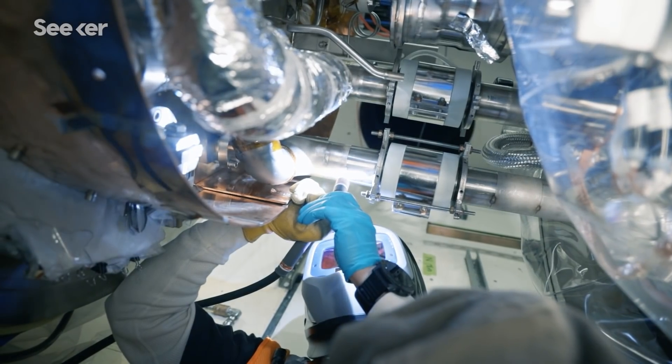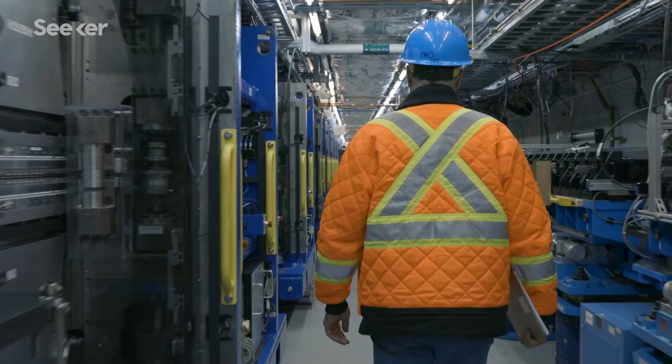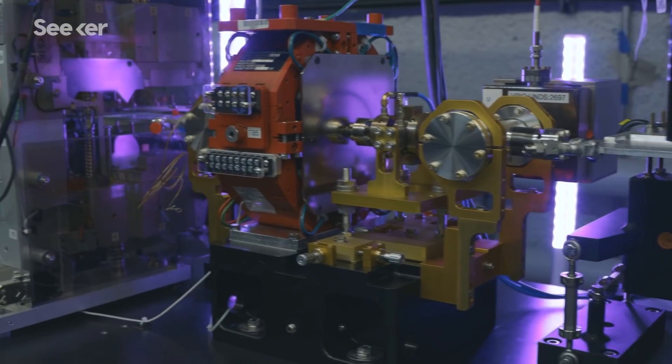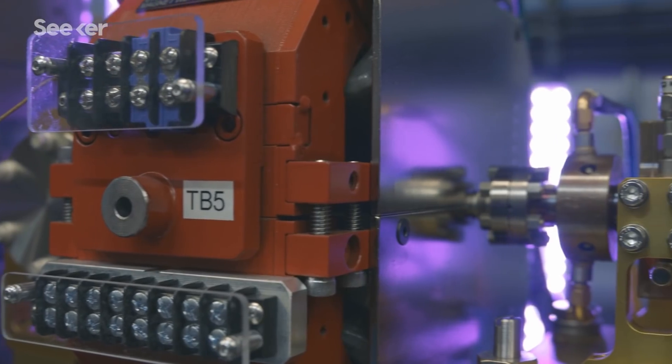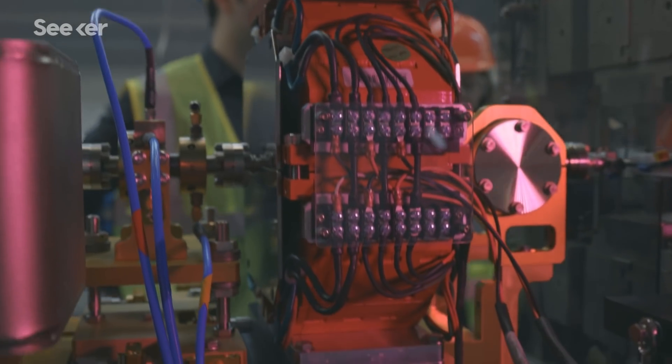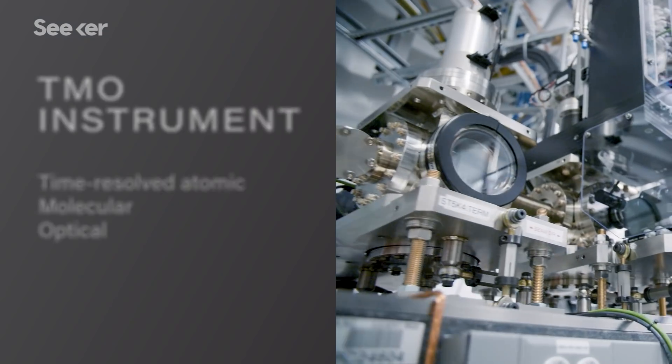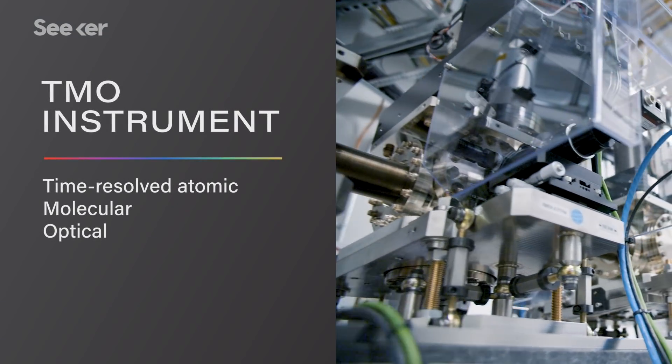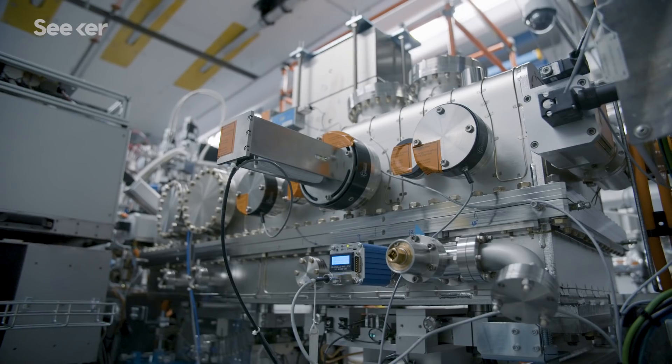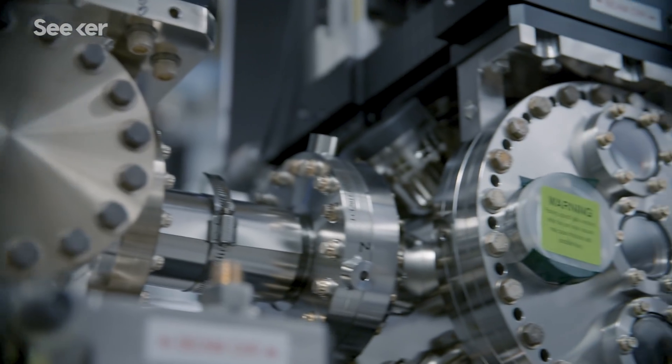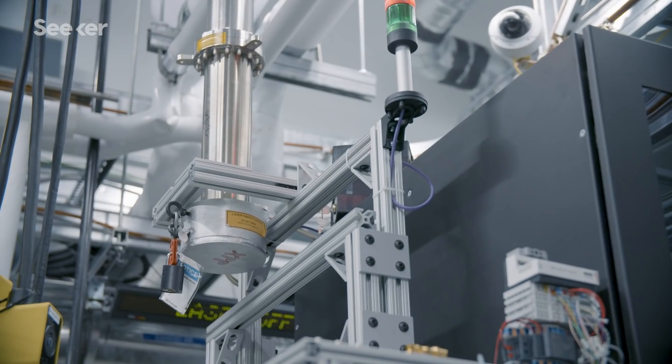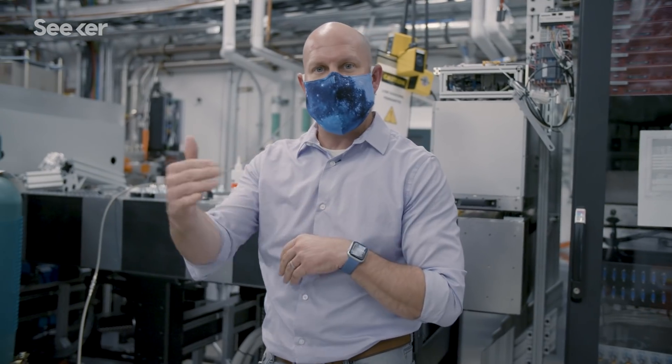In addition to having a new superconductive accelerator, LCLS-2 is also getting new undulators, which will create magnetic fields tens of thousands times stronger than the Earth's magnetic field. We are inside the hutch called the TMO instrument. This is one of the very first stops for the LCLS-2 superconducting beam when it comes online. And what this is really tuned to do is to look at the dynamic properties of how energy is transferred from one state to another.